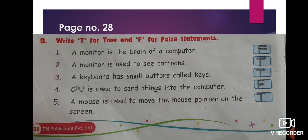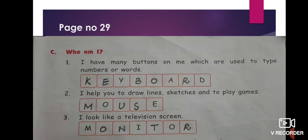Next is True or False. Write T for True and F for False. 'A monitor is the brain of a computer' — False; the CPU is the brain. 'A monitor is used to see cartoons' — True. 'A keyboard has small buttons called keys' — True. 'CPU is used to send things into the computer' — False. 'A mouse is used to move the mouse pointer on the screen' — True.